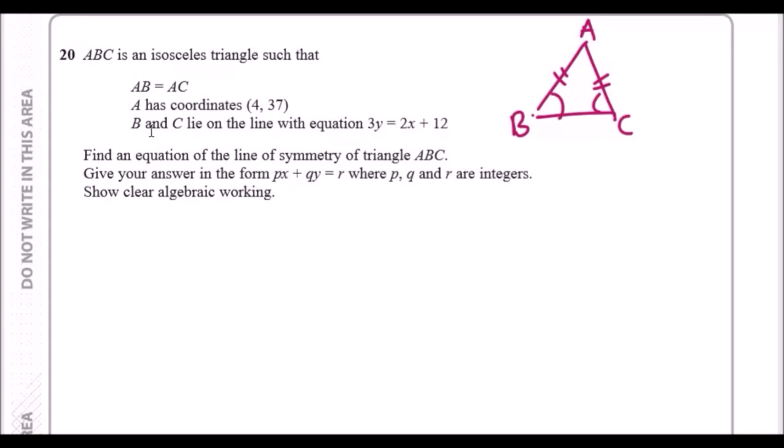A has coordinates (4, 37), labeled there. B and C lie on the line with equation 3y = 2x + 12. We can imagine this is a straight line, so we can eventually work out the gradient and whatever we need to do.